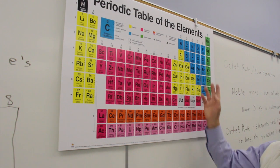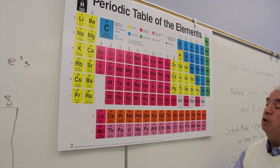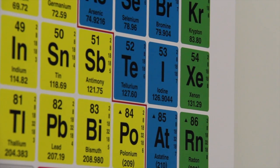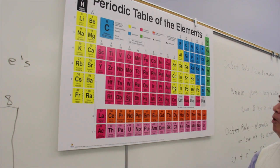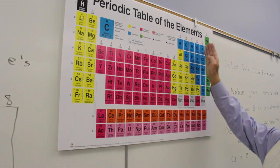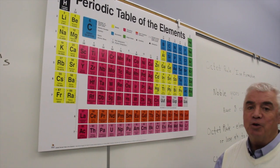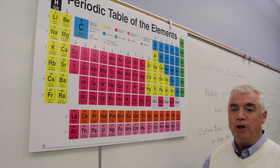Or if we were to pick something over here, element 52, tellurium, for example. It has a total of 52 electrons, but it's in group 6A, so it has 6 valence shell electrons.